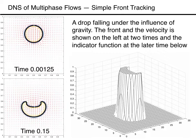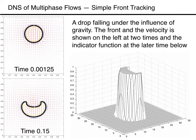We test the new code on the same problem used already and consider a drop falling under gravity. The front and the velocity is shown at two times in the two frames on the left, and the frame on the right shows the marker at the later time using a three-dimensional view. It is clear that the marker is constant in each fluid and that the interface is reasonably thin. Since the surface tension is zero, the drop will keep deforming, and once it has deformed to a point where its thickness is comparable to the grid spacing, then obviously the marker field will deteriorate.